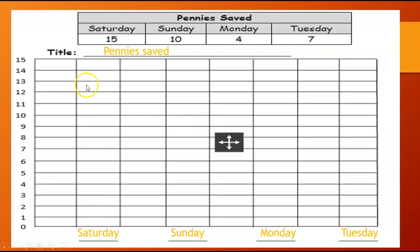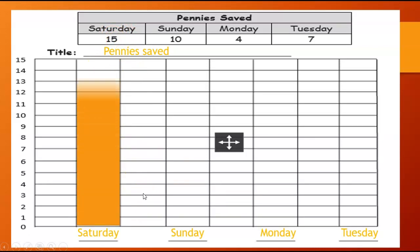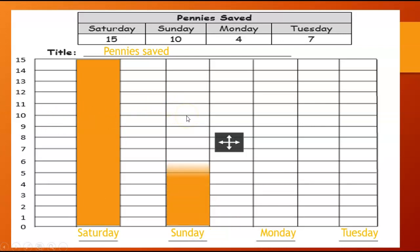Now, in this column right here, how many pennies were saved on Saturday? Fifteen. So I'm going to start at the bottom and go all the way up to the fifteen line. There we go. Sunday, how many were saved? Ten. So I need to start at the bottom and go all the way to this ten line right here. There we go.